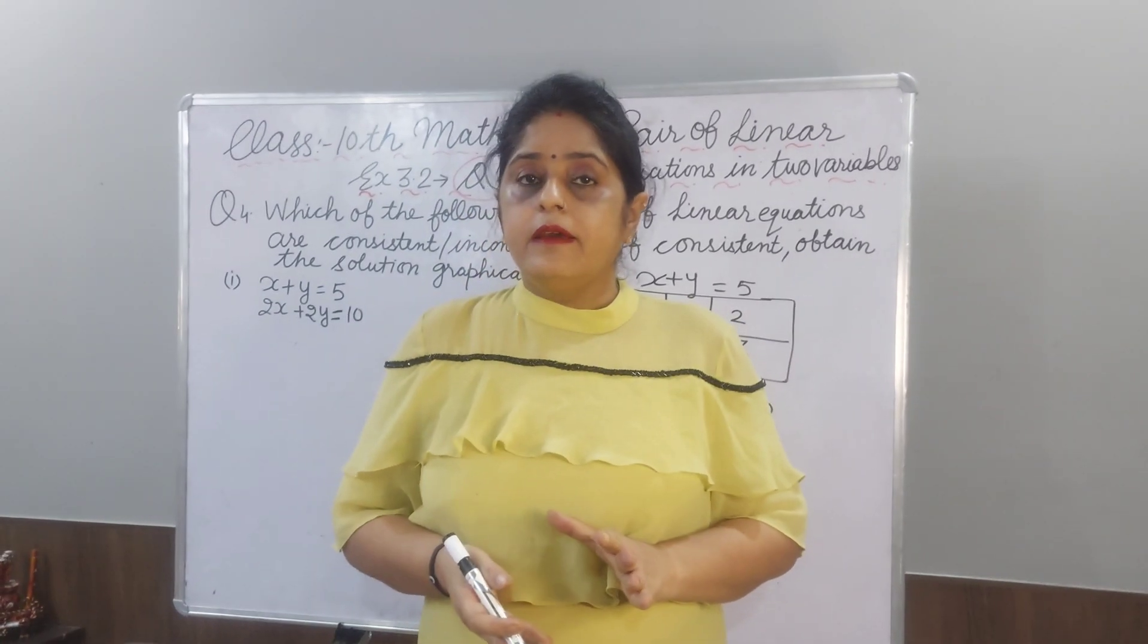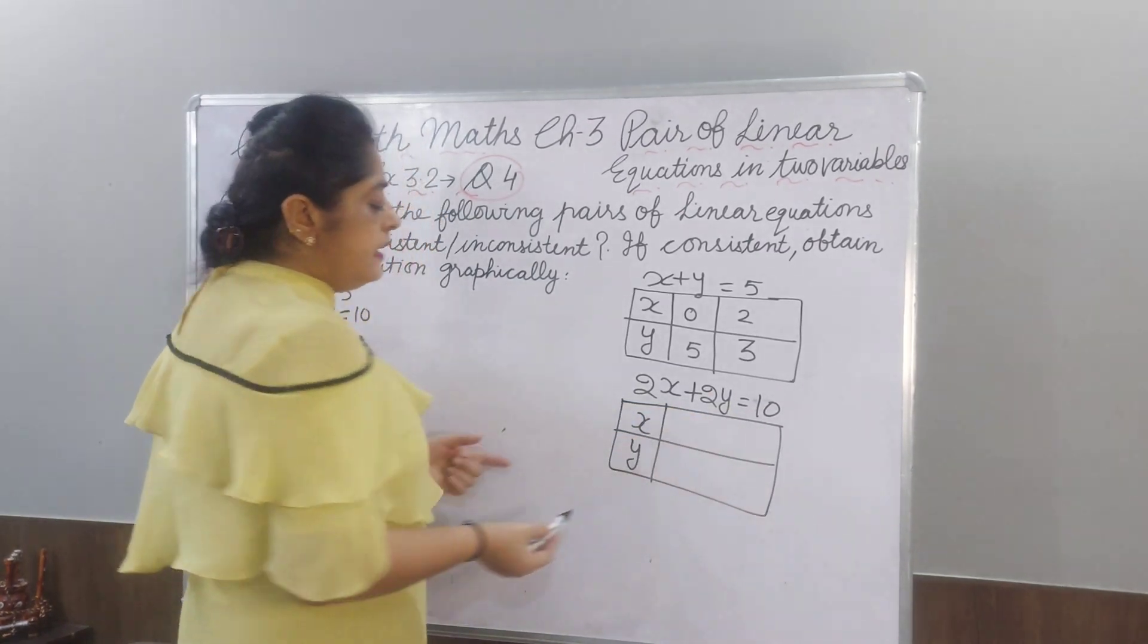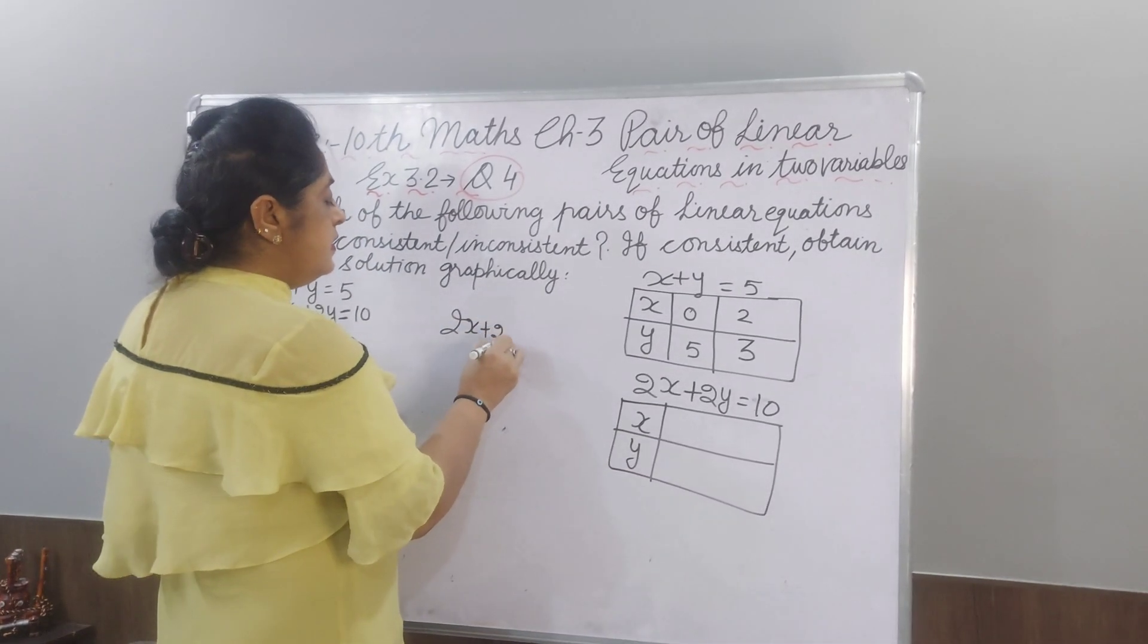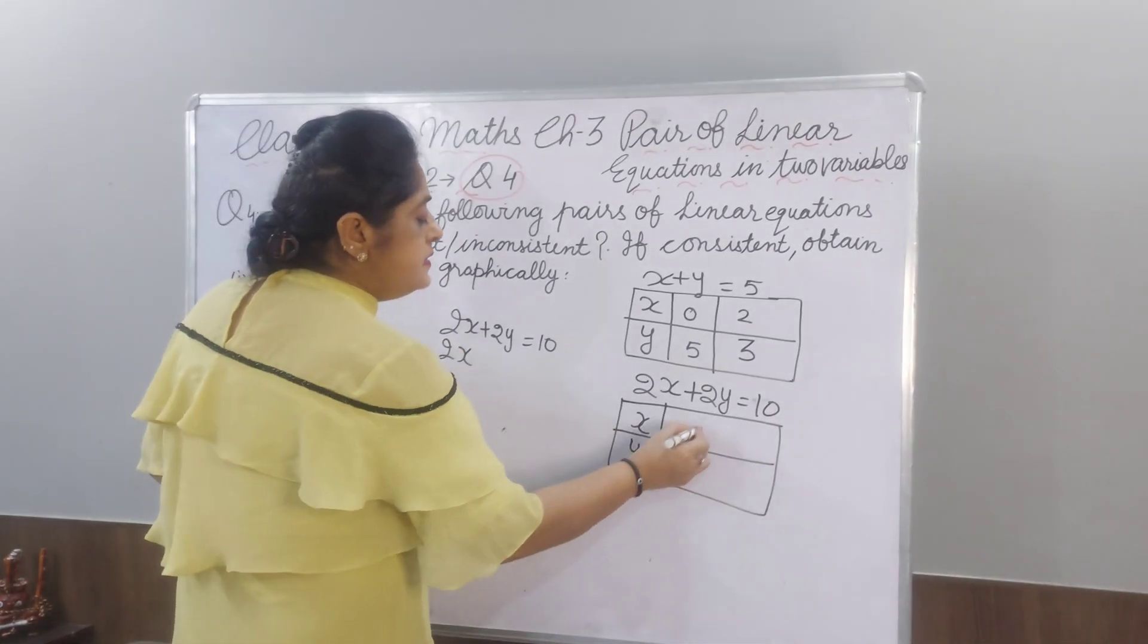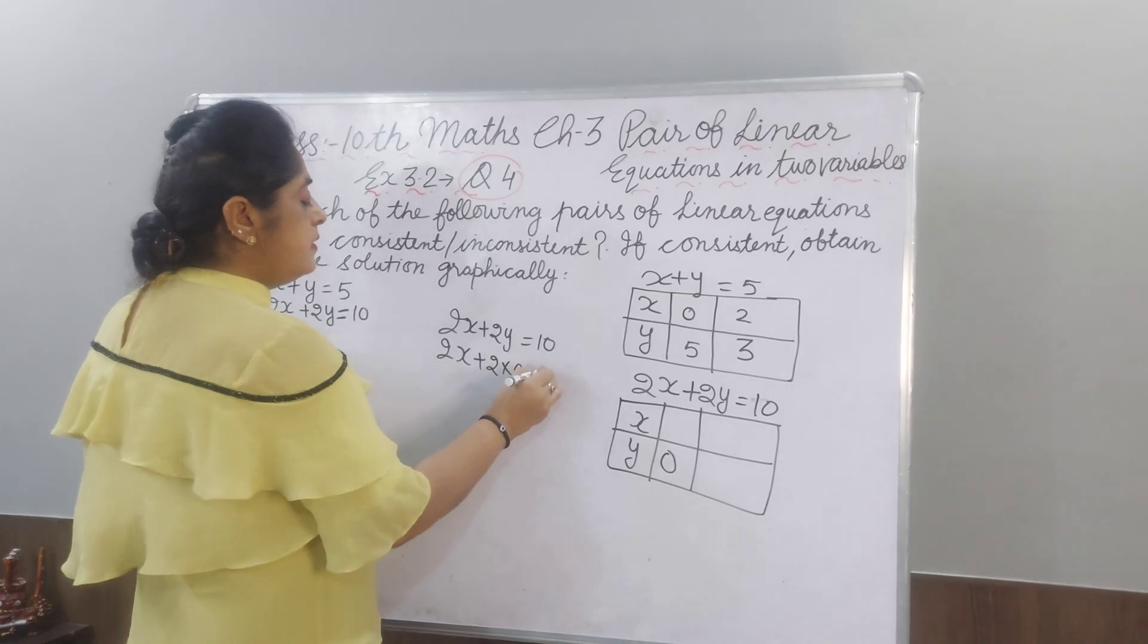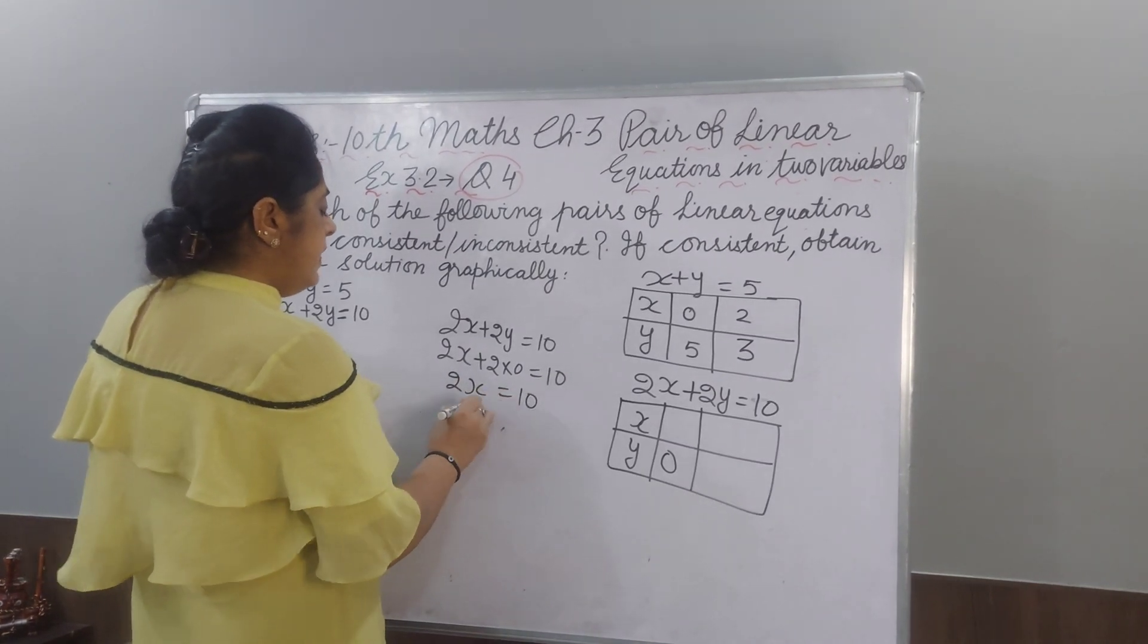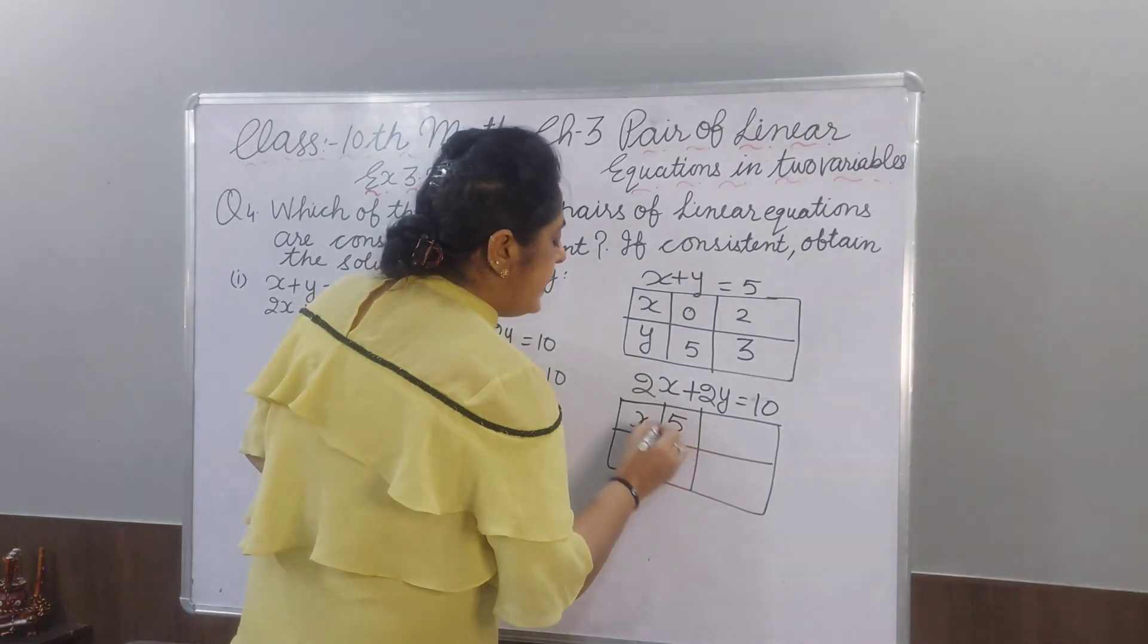Now, one, this table we have made, now we make second table. We will make second table. 2X plus 2Y equal to 10. Now, this time you take Y as a 0. 2X plus 2Y equal to 10. You are taking Y as 0. 2 multiplies 0. 0 multiply by any number, the number will be 0. So, 2X equal to 10. X value, you will get 5. We are getting X as 5.